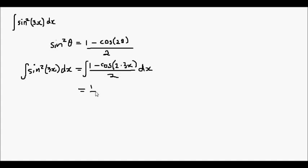and if I take the half out the front, I can rewrite it as a half outside of the integral of 1 - cos(6x) dx, and now it's quite a straightforward integral.